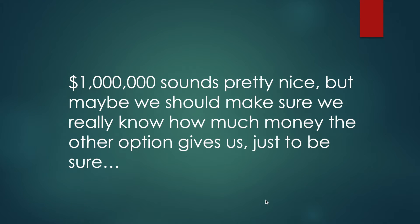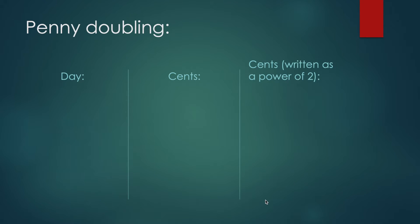One million dollars sounds pretty nice, but maybe we should take a look at how much money the other option gives. Looking at this more closely: day 1 you receive 1 cent, day 2 you receive 2 cents, day 3 you receive 4 cents, day 4 you receive 8 cents, day 5 you receive 16 cents. So what do you receive on day 30?